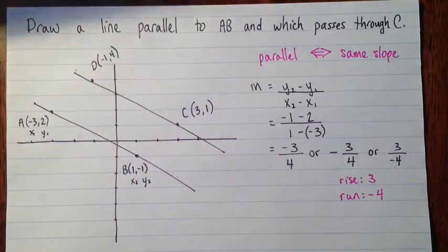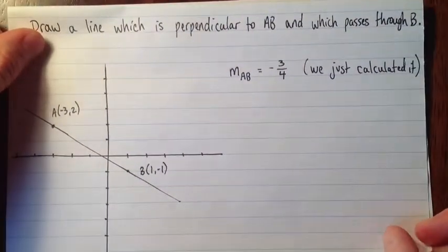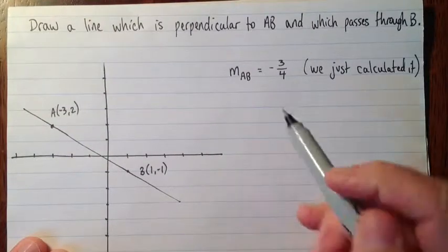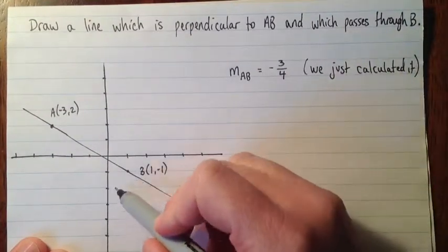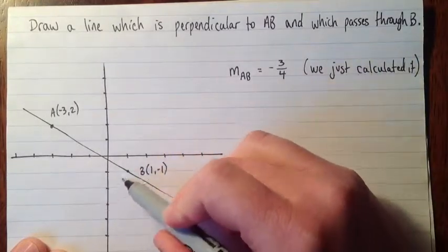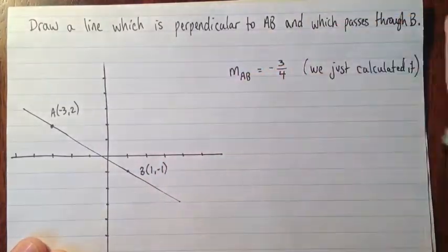So here we're going to have another question here. Draw a line that's perpendicular to AB, and I've got the same AB, just to save a bit of time, and that passes through B. So what this is going to look like, it'll be something like this. That point goes through B, and it's perpendicular to AB.